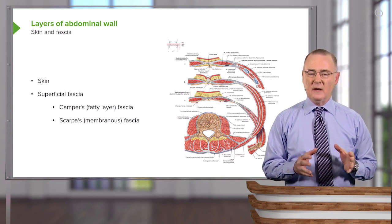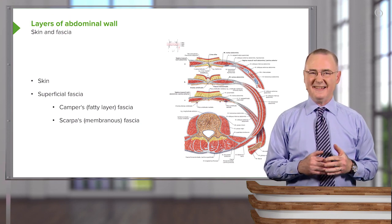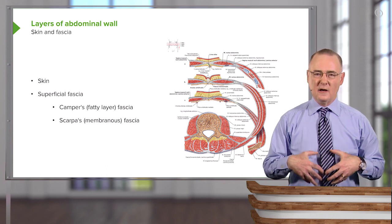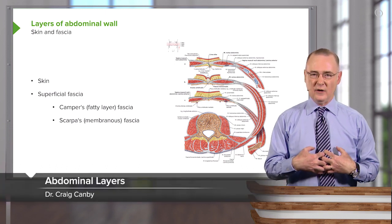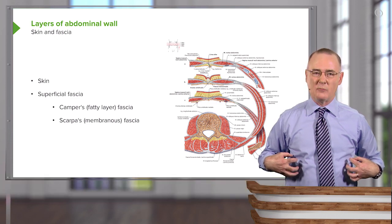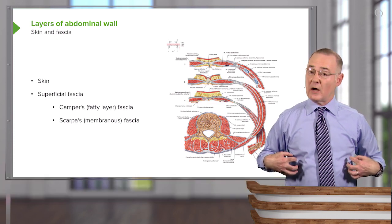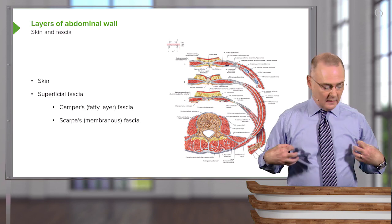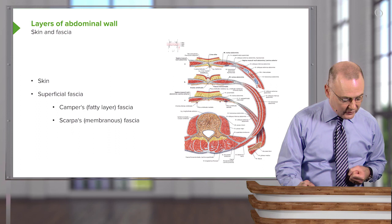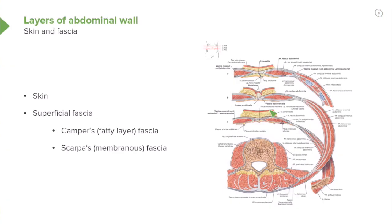Now we're going to spend a moment to understand the layering of the abdominal wall, and we're going to concentrate away from the vertically oriented muscles and focus more on the anterolateral portion of how the abdominal wall is layered. First we're going to have the skin, and we see in the illustration here the skin. We will then have two components that make up superficial fascia.